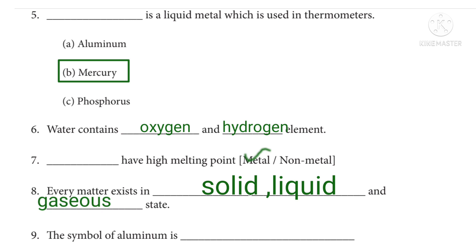Ninth question: the symbol of aluminium is dash. Answer: Al.